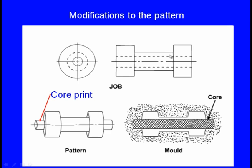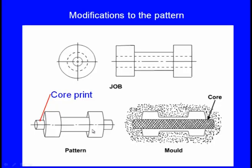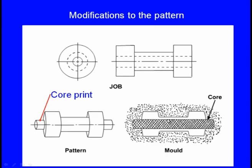To make this component, we have to make a similar cavity inside the mould. Naturally one can think the pattern should be similar to this shape, but surprisingly the pattern's geometry is different from the geometry of the casting which we want. There is a difference — some projection is there on each side. This is the mould cavity, this is the core. The molten metal flows around the core and after solidification, we break this core — that is how we get the axial hole in the cast component.